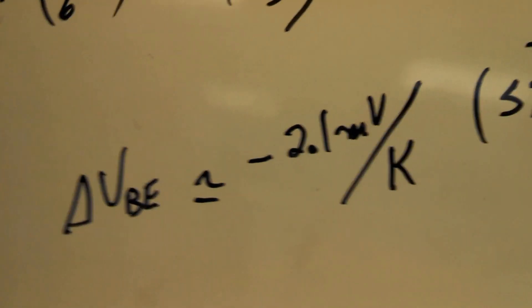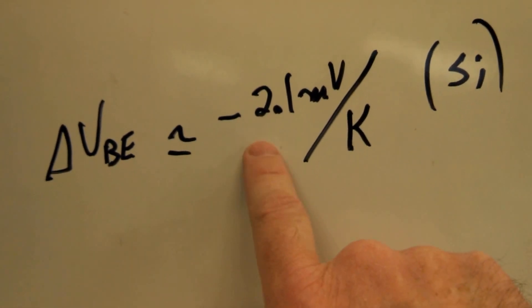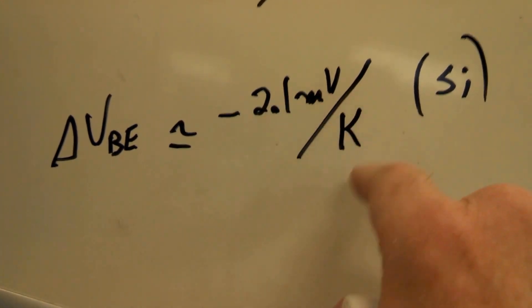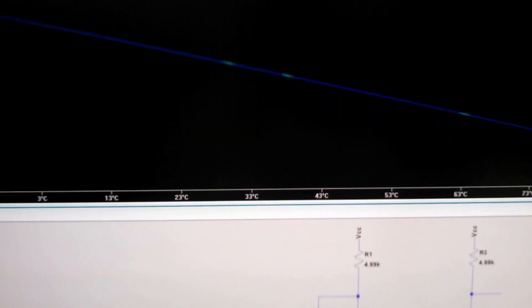That dominates, and in the end we see that VBE for a silicon diode is approximately minus 2.1 millivolts per Kelvin. And that's what leads to this curve here, which again is pretty dang linear.